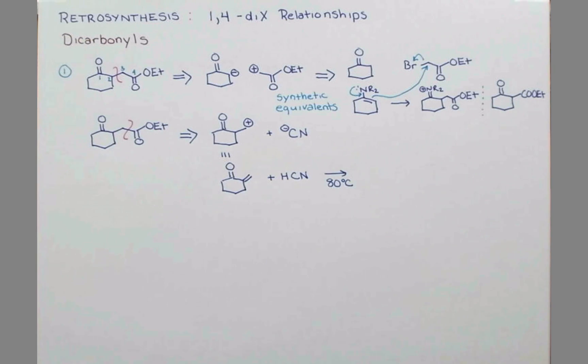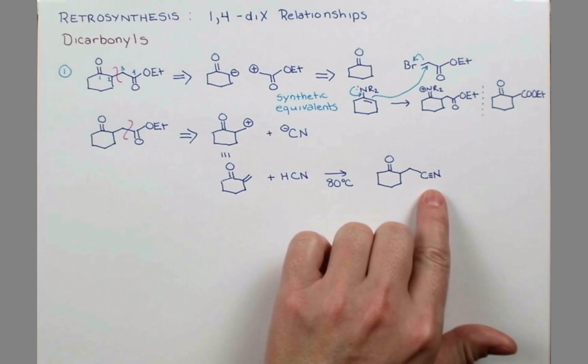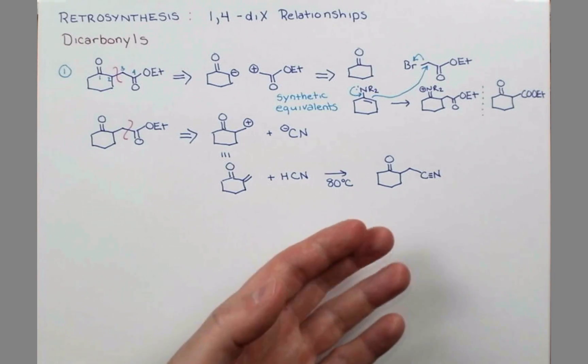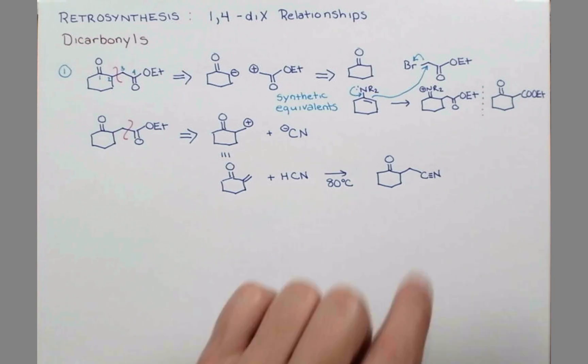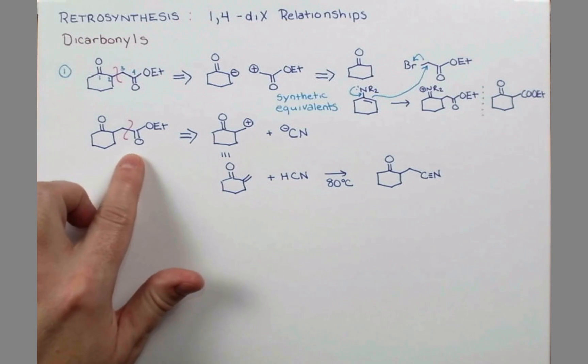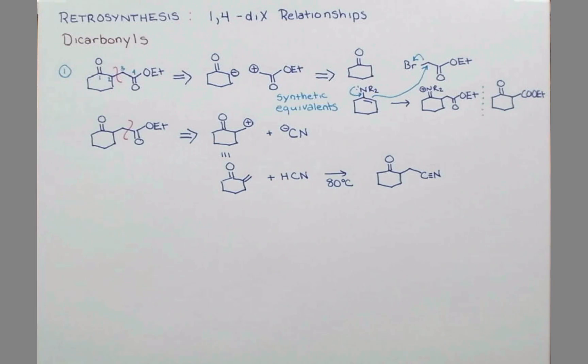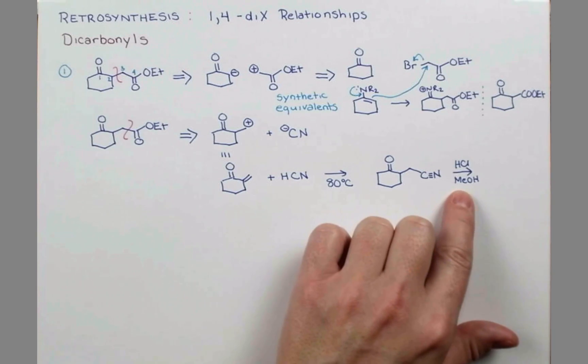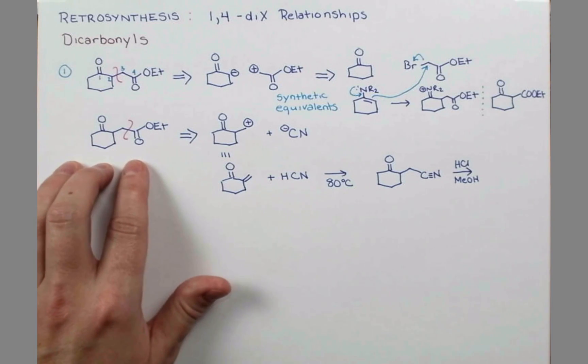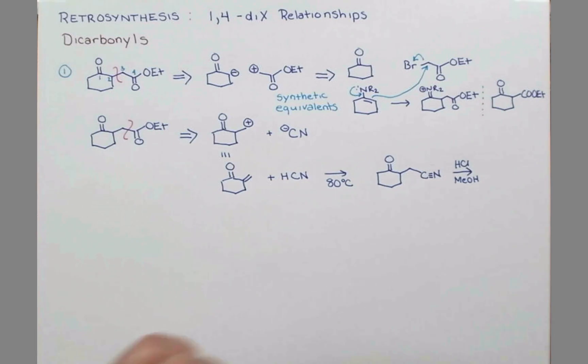We may warm this to promote our conjugate addition and we'll get this product. Now nitriles can undergo hydrolysis reactions. Hydrolysis in general just in water will give the carboxylic acid, but if we carry this out using acid in an alcoholic solvent like methanol or ethanol, we'll produce the corresponding methyl or ethyl ester. I meant to write ethyl but I wrote methyl. So let's just hydrolyze this to the methyl ester and we'll be very close to this product. Just changing out the solvent here will give you the ethyl ester.